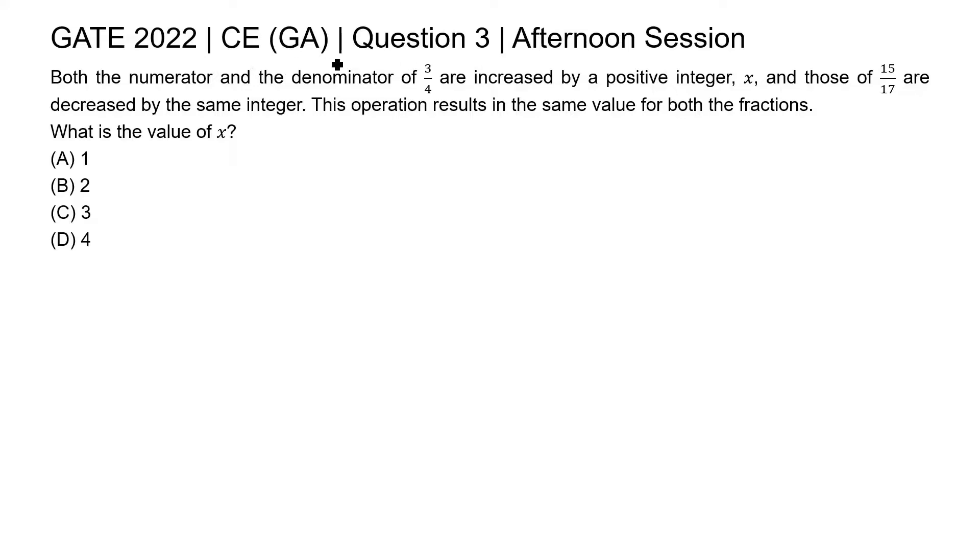This is question 3 of civil engineering general aptitude section of GATE 2022 afternoon session. Both the numerator and the denominator of 3 by 4 are increased by a positive integer x and those of 15 by 17 are decreased by the same integer. This operation results in the same value for both the fractions. What is the value of x?